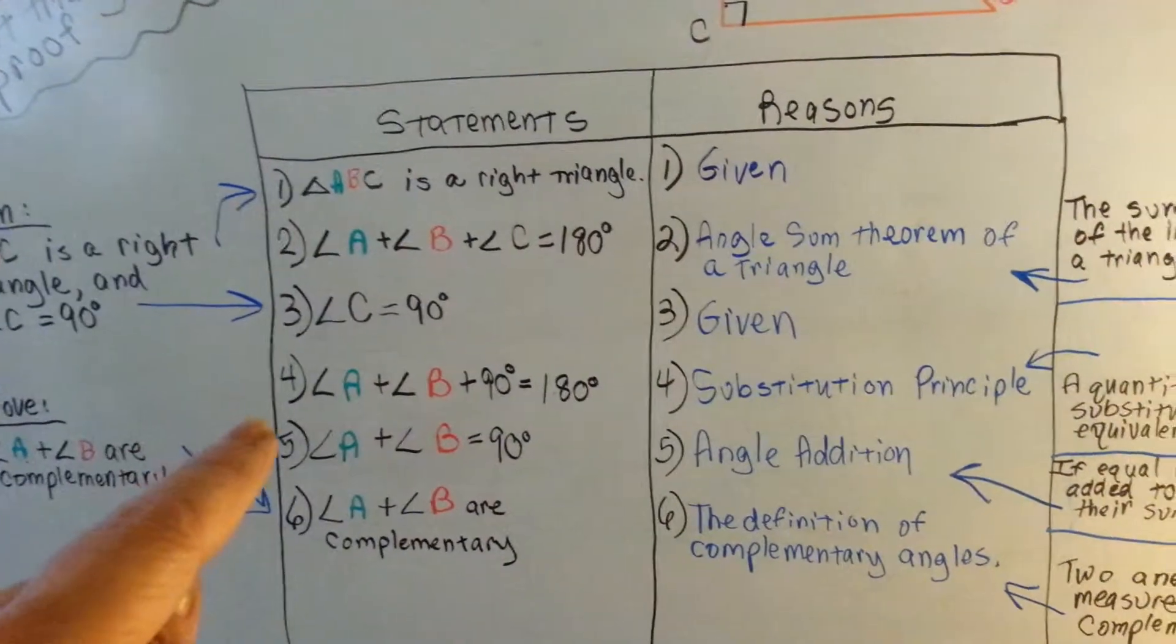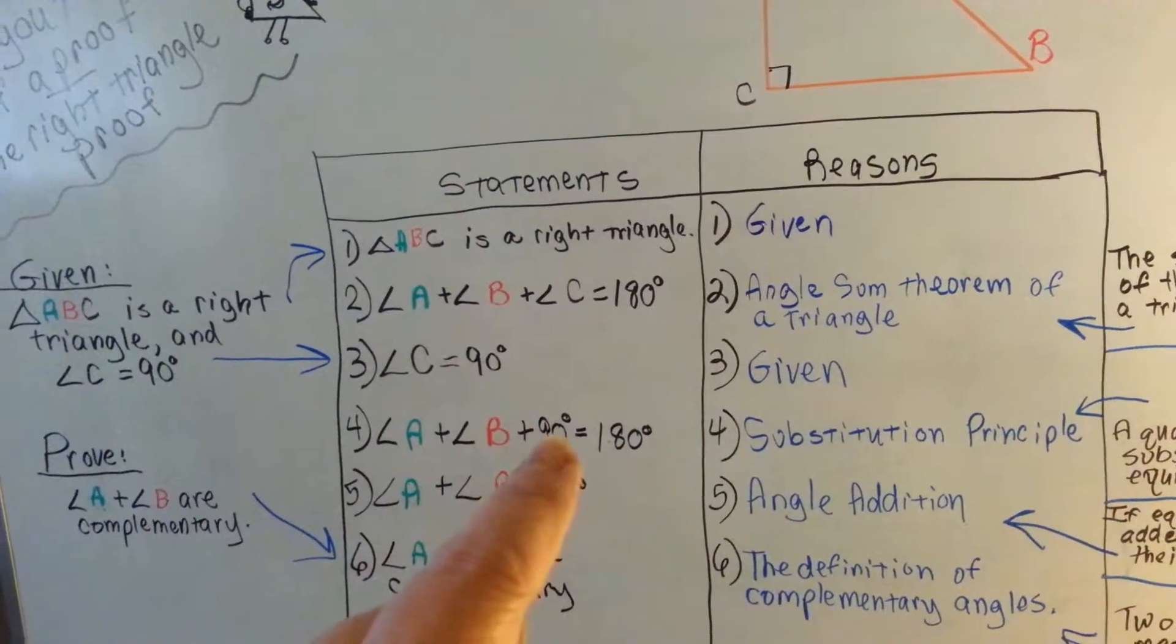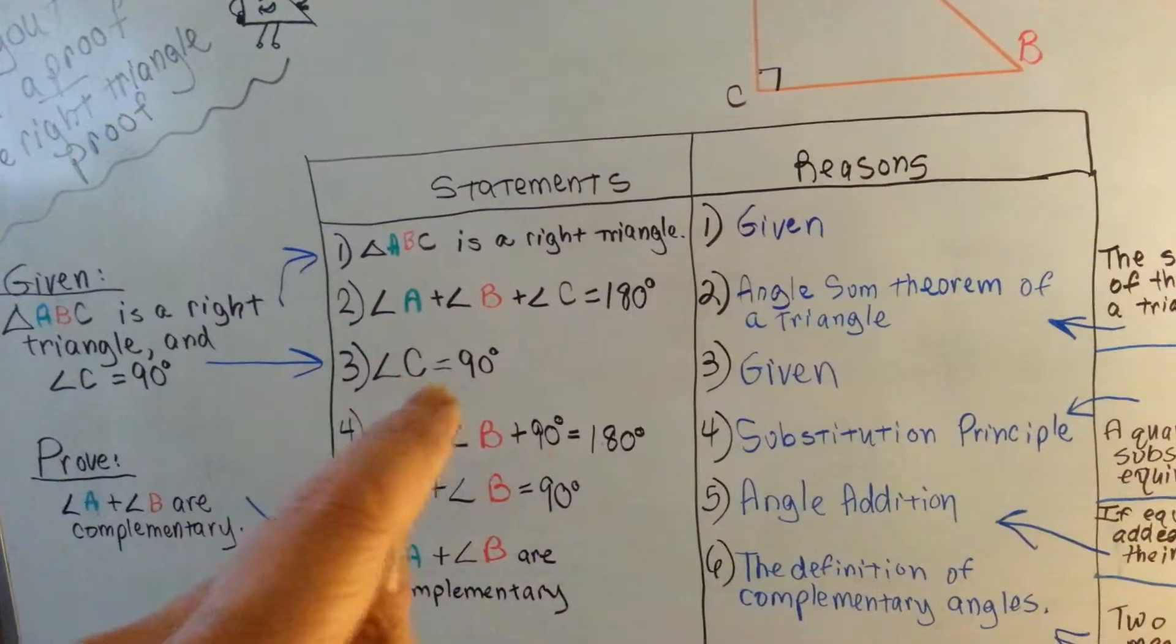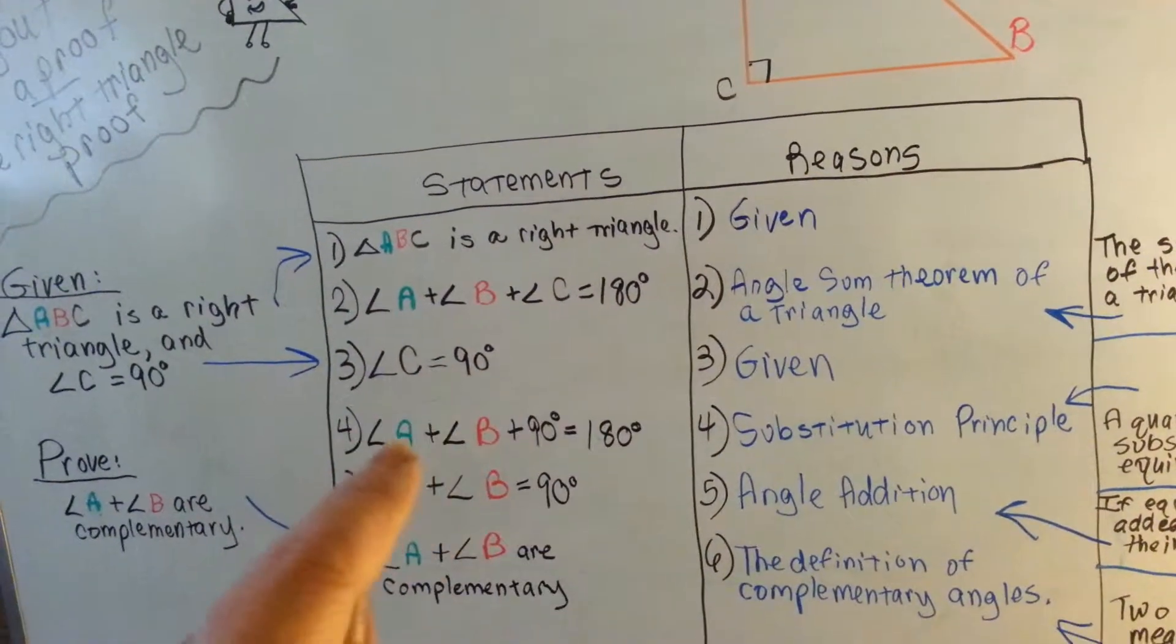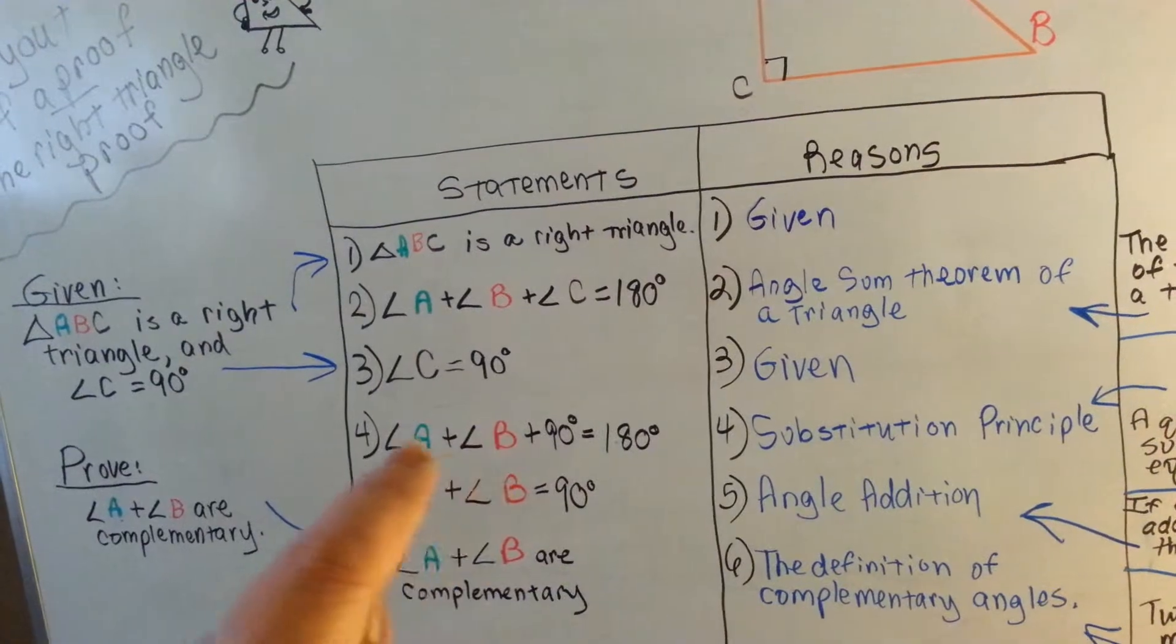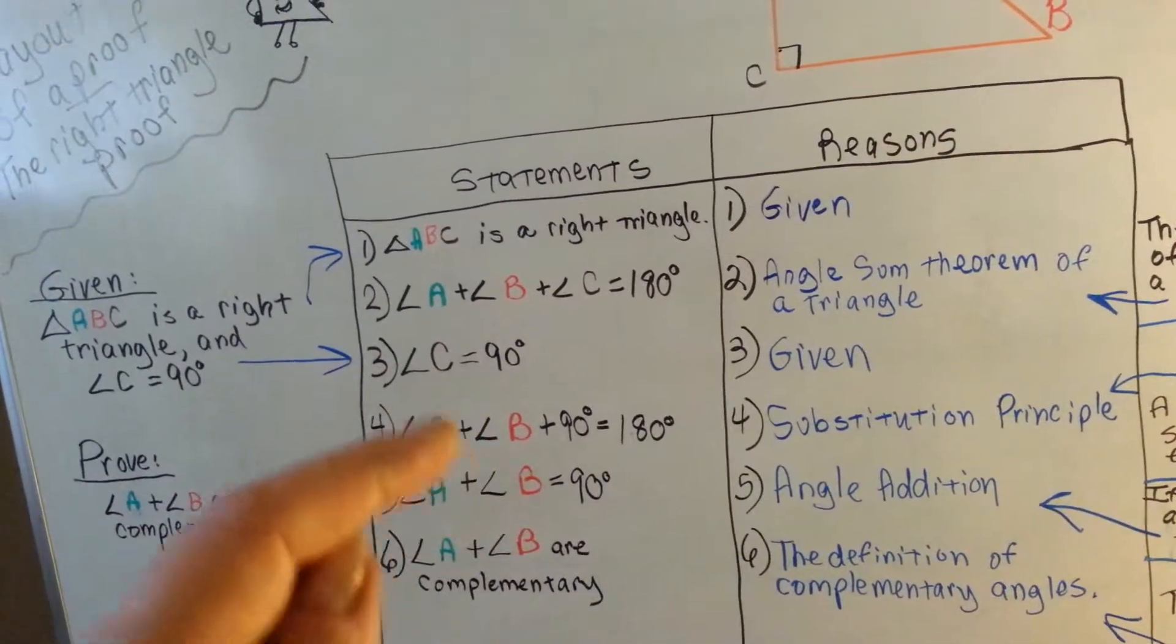So number 4 says that angle A plus angle B plus 90 degrees is 180 degrees. Because C is 90 and we know that the three of them are 180, then that means that angle A and B must also be 90. See how we slowly did that to prove that?